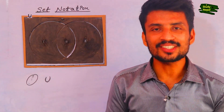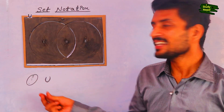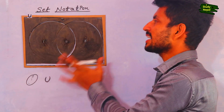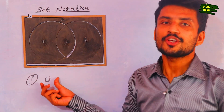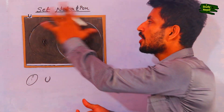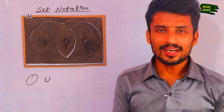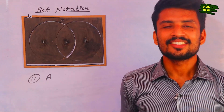The first portion I want to show is U. This is the set notation and this is the shaded portion for U. U means overall everything inside the Venn diagram. Now let's go to the second topic.